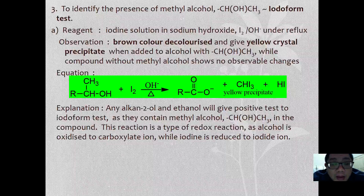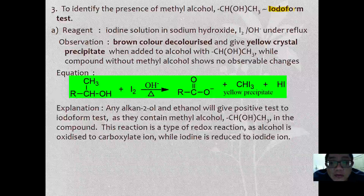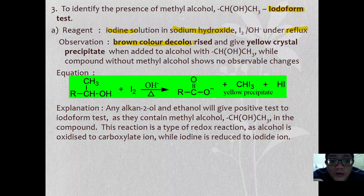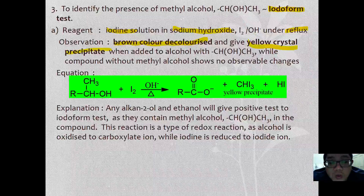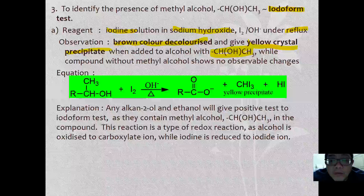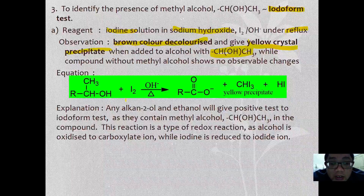To identify secondary alcohols further, there is a special test called the Iodoform test. The reagent used for the Iodoform test is iodine solution in sodium hydroxide under reflux. What we observe is that the brown color of the iodine decolorizes and at the end a yellow crystalline precipitate is formed, when added to a group that contains a methyl alcohol group. This is the key to a positive Iodoform test.